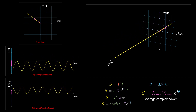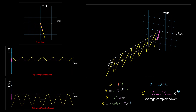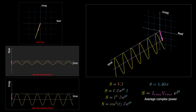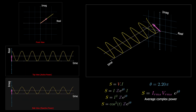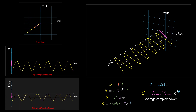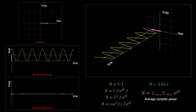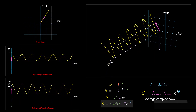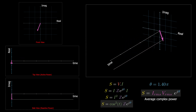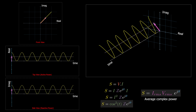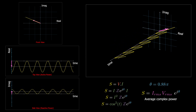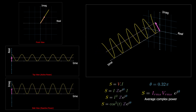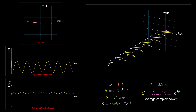As the phase angle changes, both instantaneous and average complex power rotate in the complex plane. Whether instantaneous or average, complex power has real and imaginary parts — the top view and the side view respectively. The real part is called active power; the imaginary part is called reactive power. Complex power is divided between active and reactive power based on the phase angle: as active power goes up, reactive power goes down, and vice versa. From now on we will use average values of voltage, current, and power.